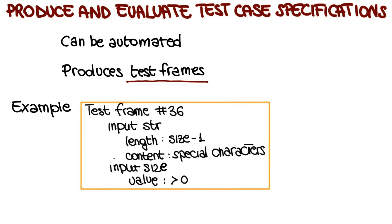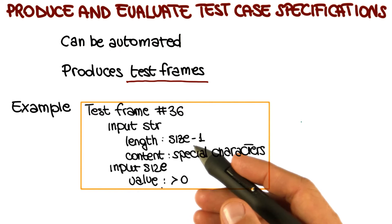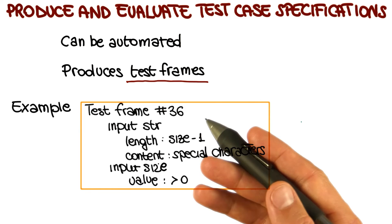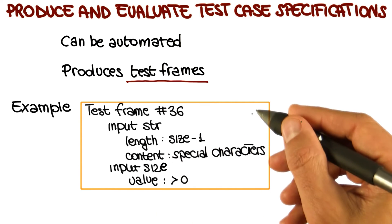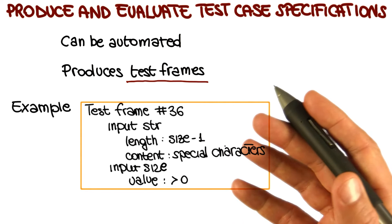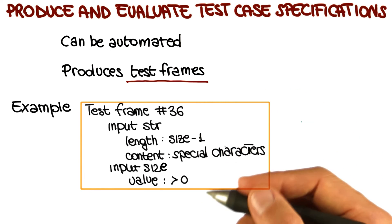As the title says, this step is meant to produce, but also evaluate test case specifications. What does it mean to evaluate? One of the advantages of this approach is that we can easily use it to assess how many test frames, and therefore, how many test cases we will generate with the current list of categories, choices, and constraints.